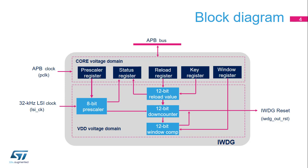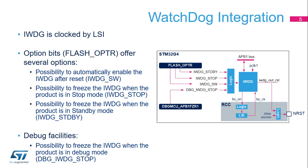Two clocks are needed. The APB clock is required in order to access registers. The LSI clock is required for the functional part of the watchdog. This architecture allows the Independent Watchdog to work even in stop and standby modes. A programmable 8-bit pre-scaler is used to divide the LSI oscillator frequency. The 12-bit down-counter defines the timeout value. The IWDG is clocked by the 32 kHz RC oscillator, named LSI.